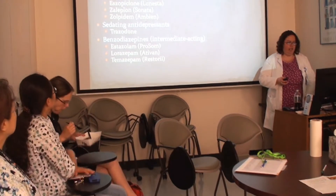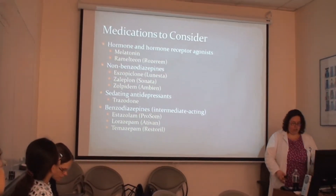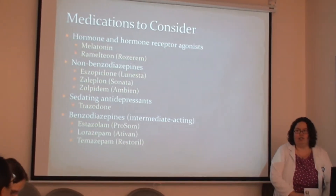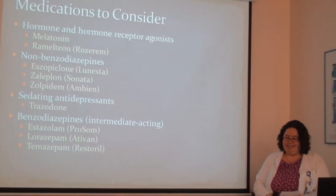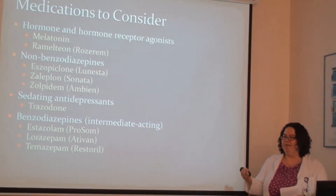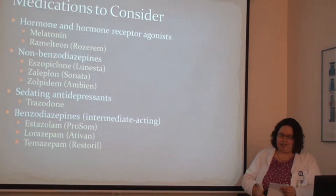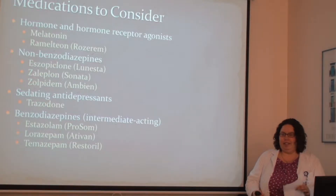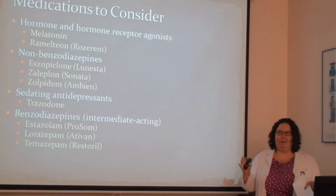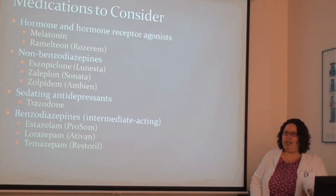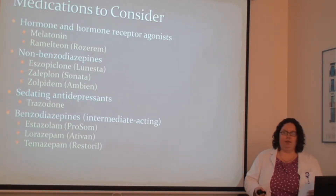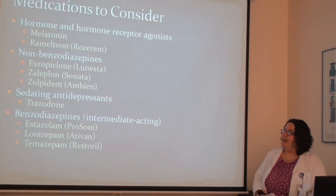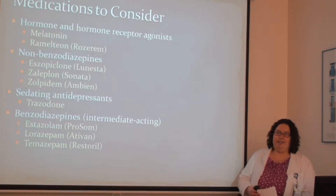Melatonin is usually what I like to start with for geriatric patients. It's not FDA approved — it's a natural supplement. Our pineal gland actually makes melatonin, synthesized from tryptophan — as we all know, turkey, tryptophan, Thanksgiving. Melatonin naturally plays a large role in sleep and circadian rhythms, as studies show high levels of melatonin in the body during nighttime. You can get this over the counter; the VA has it as non-formulary so we can use it for some patients.